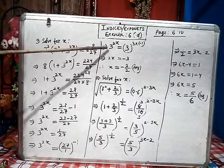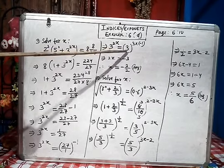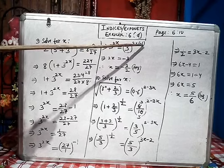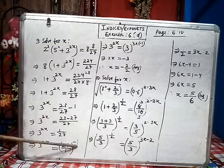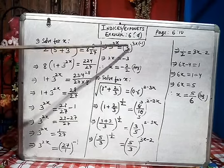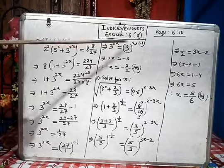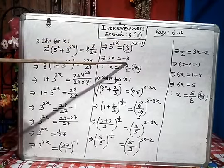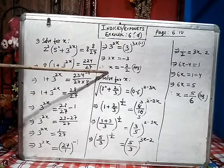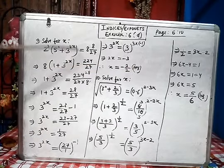Why? To make both the base equal. So 3^(2x) same, and here 27 I wrote 3 cube and the old power is minus 1 which gets multiplied here. Now both the base has become same. So I can write both the power equal: 2x = 3 times minus 1 equals minus 3. x = -3/2 is our answer. This is how solve for x, we got the value of x.